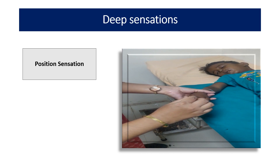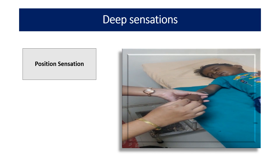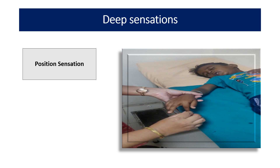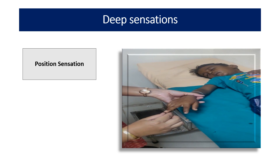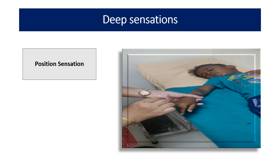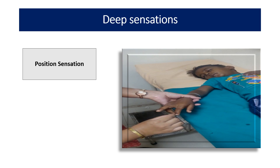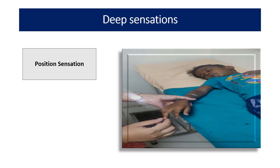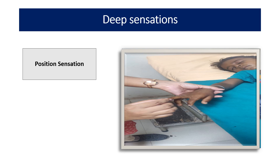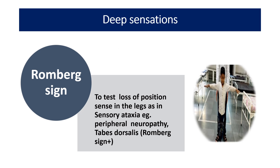For position sensation, we hold the hand and move the finger up and down. The child should respond either up or down. Similarly, we can perform this in the lower legs by moving the toes. For position sense, we can also perform the Romberg test, which I have already explained in detail during the 8th cranial nerve examination.